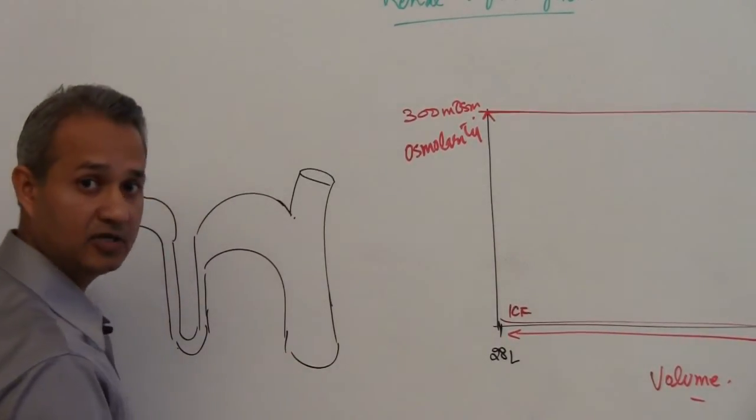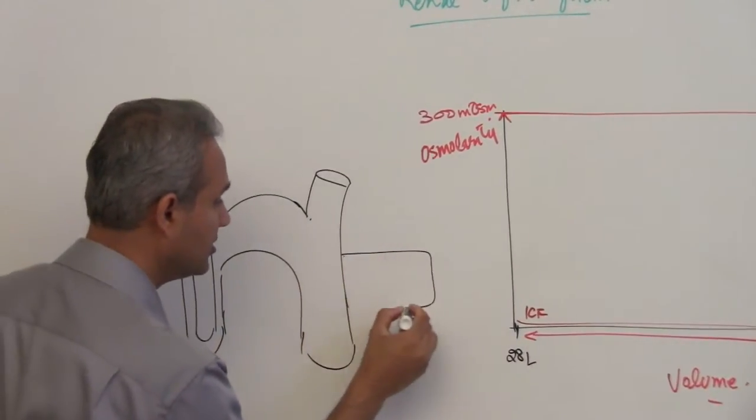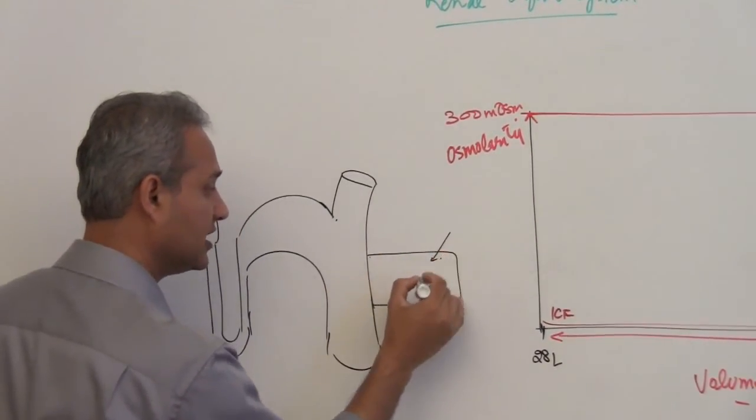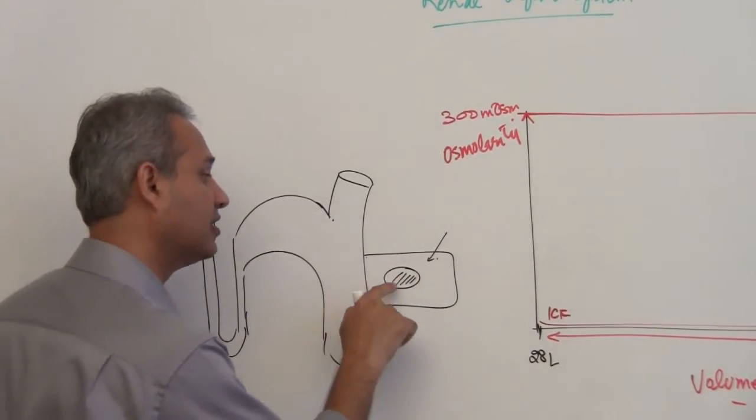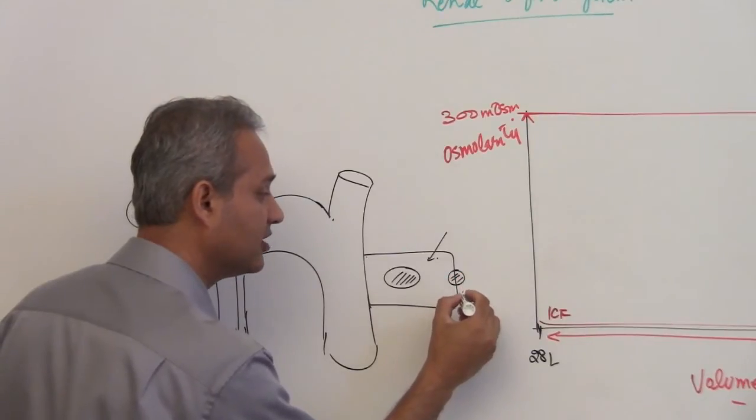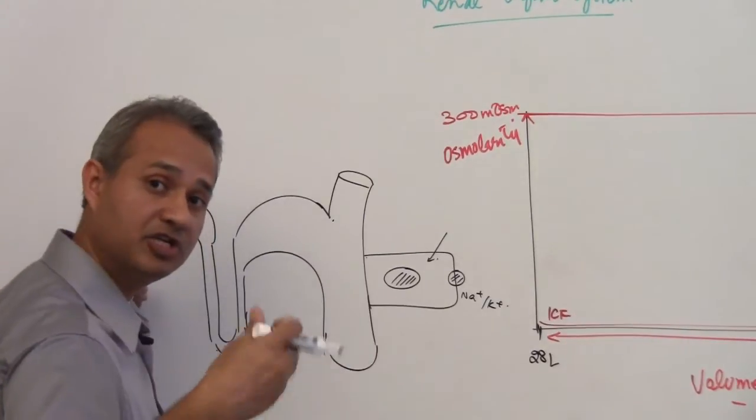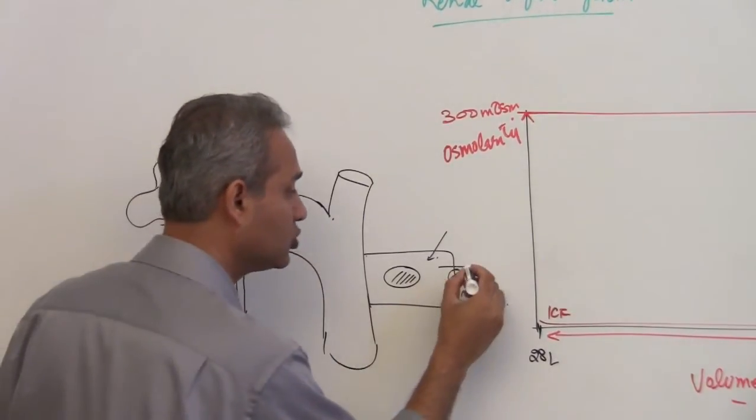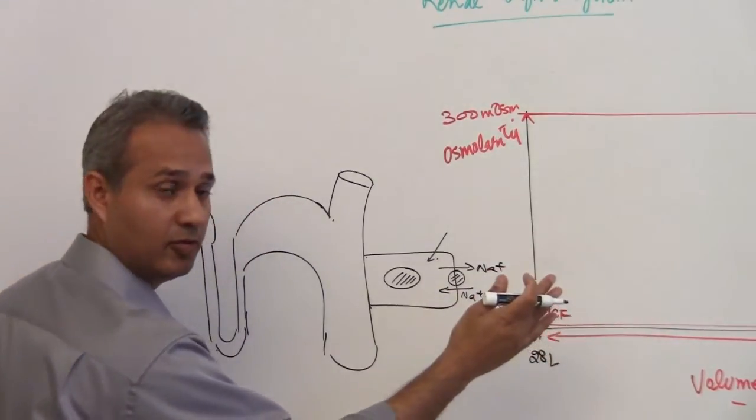What happens is that the aldosterone, it acts on the cells here, it goes into the cell, it goes to the nucleus - we would discuss this in more detail. But what it would do is it increases this activity of sodium-potassium pump by manufacturing more pumps, and so the sodium would start getting out of the body of the cell.